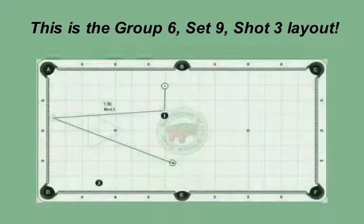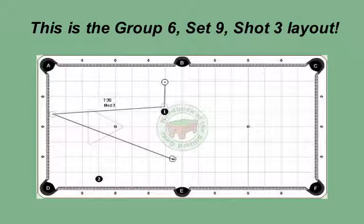This is the Group 6, Set 9, Shot 3 layout. It's generally better to play your shots with the least amount of energy needed. However, in this situation, the shallow angle on the one ball will absorb most of the cue ball power. This does not leave much speed left to get shape on the two.